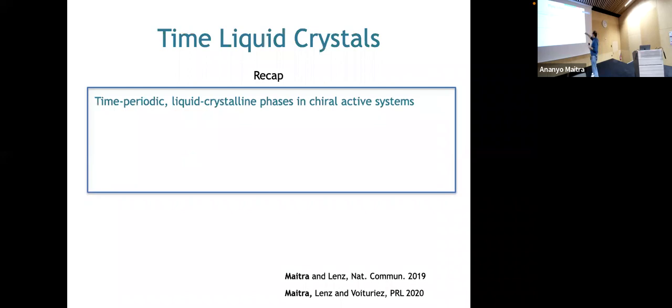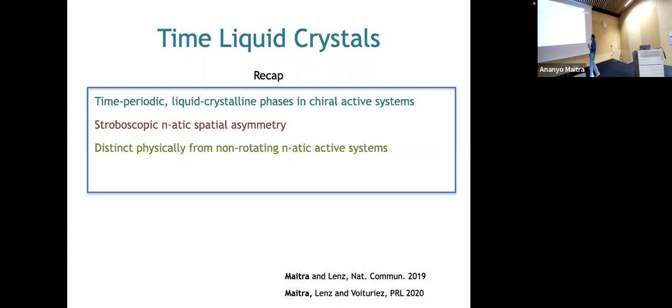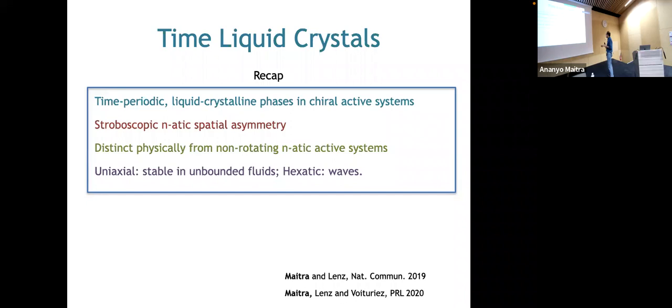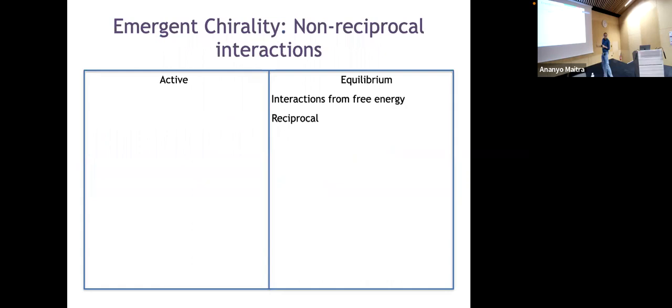To recap: I've described time-periodic liquid crystalline phases in chiral active systems with stroboscopic nematic spatial asymmetry. These are physically distinct from their non-rotating counterparts: time cholesterics are stable in unbounded fluids, and hexatic time crystals host propagating sound waves — whereas active nematics and active hexatics behave very differently. Now I want to point out a further important thing: chirality is not required for time liquid crystals.